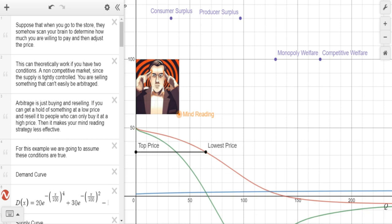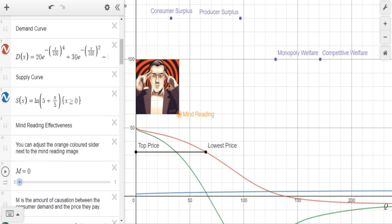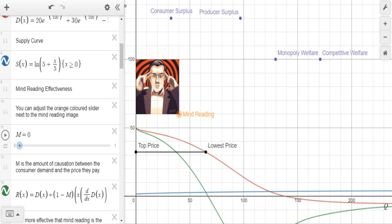If you can get a hold of something at a low price and resell it to people who can only buy it at a high price, this will make your mind reading strategy much less effective. For this example, we are going to assume these conditions are true. So our demand curve is in red, our supply curve is in blue. We have our mind reading effectiveness, which we can adjust with this orange slider right here, which applies our mind reading. And it's just a measure of the amount of causation between the consumer's demand and the price they pay.